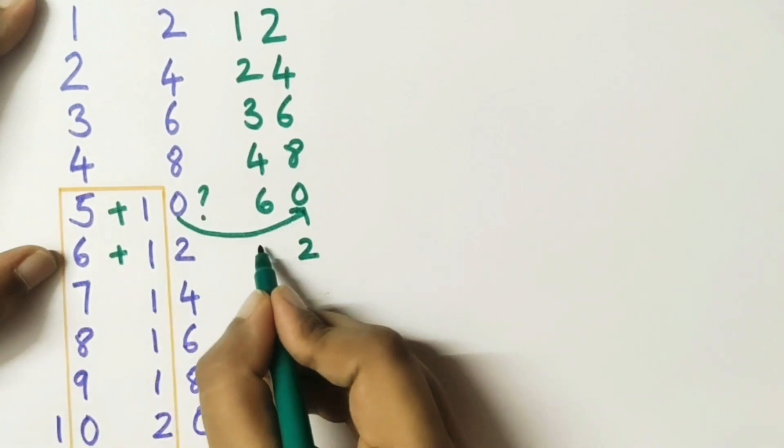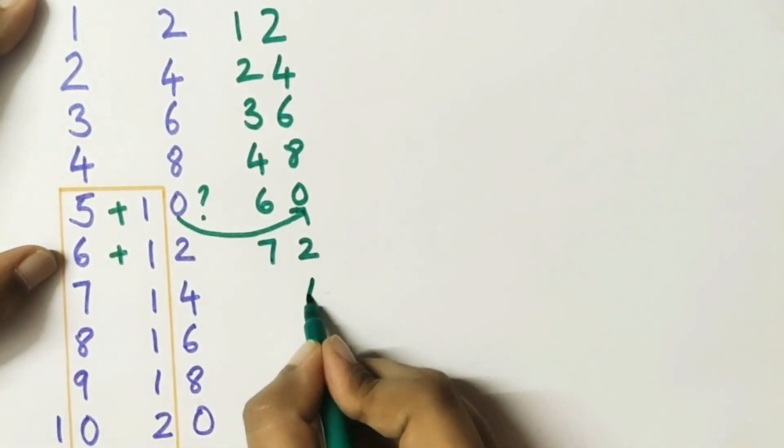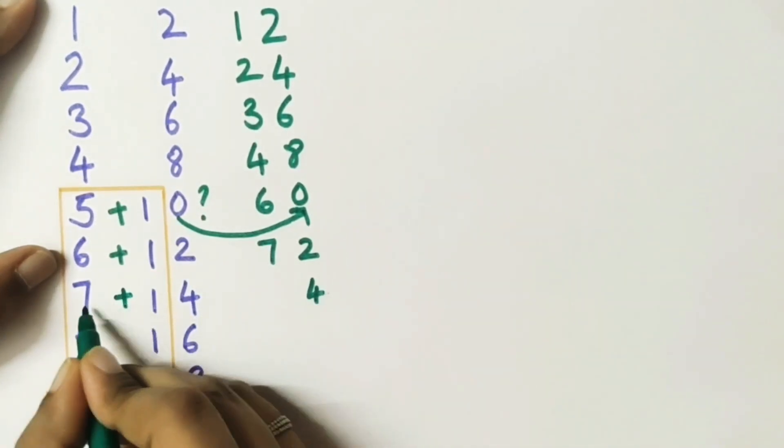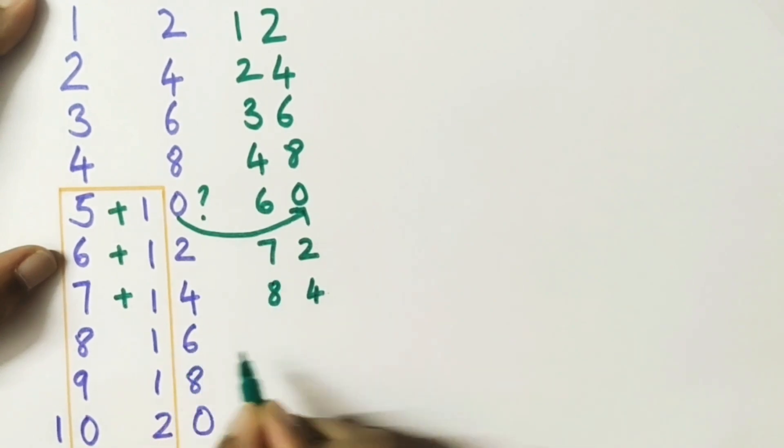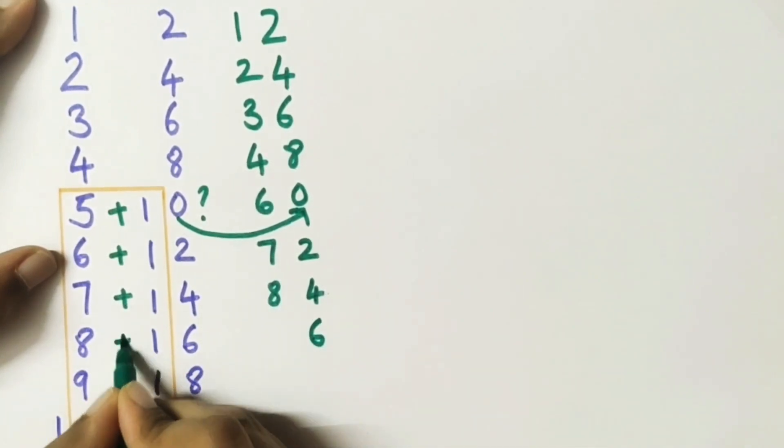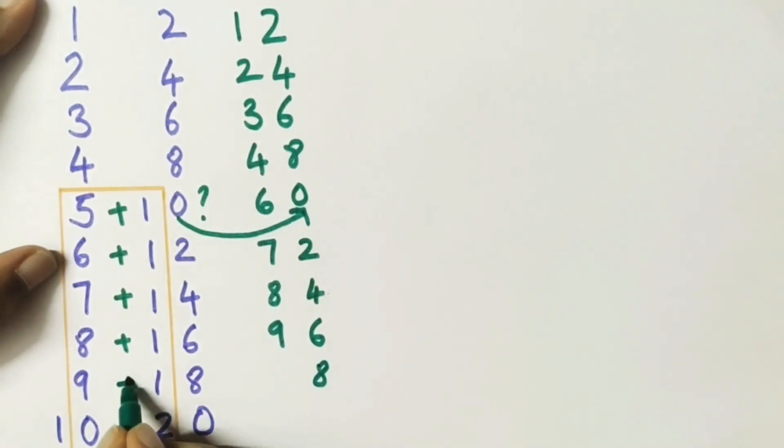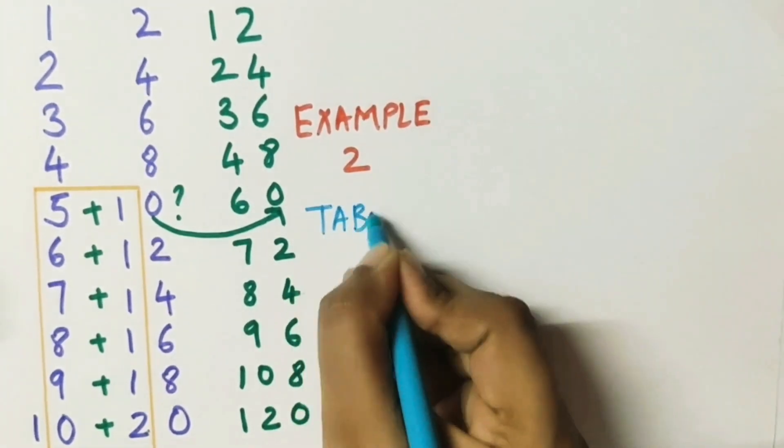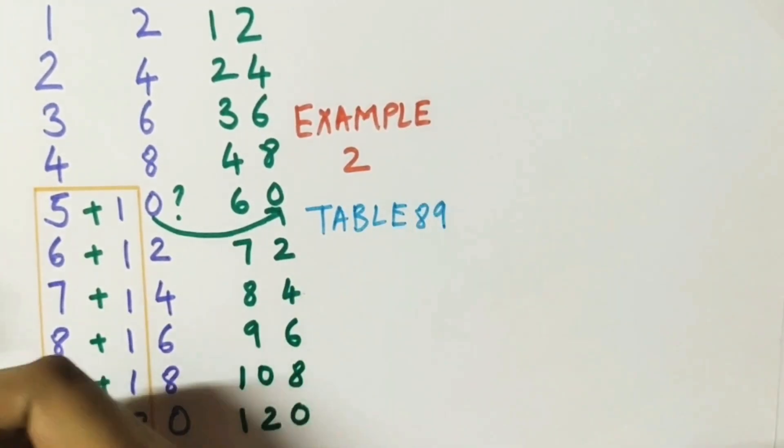Now we will take one more example, example of 89. For that, as in the previous example, we will write table of 8 and then the table of 9.